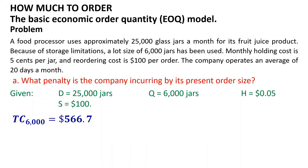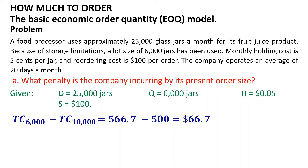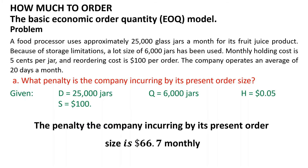Comparing the total cost corresponding to the current order quantity Q and the total cost corresponding to the economic order quantity Q0: the total cost corresponding to the current order quantity Q is more than that corresponding to Q0 by $66.70. So the penalty the company is incurring by its present order size is $66.70 per month.